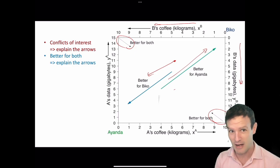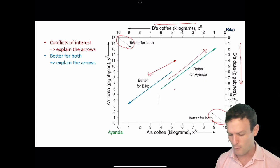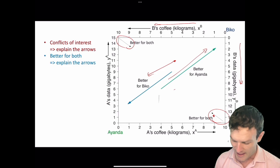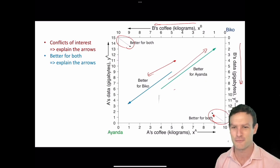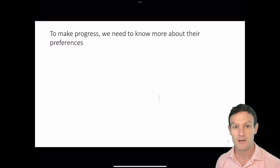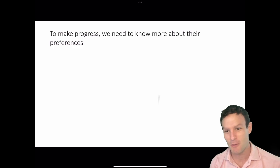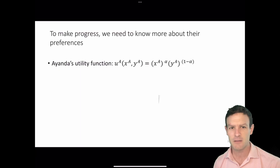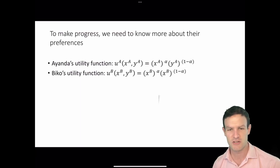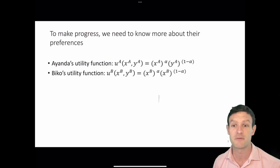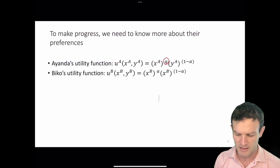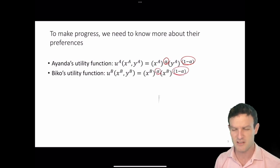If you're unsure about this, think about what would happen if we were at point z and Ayanda could get one more unit of y by giving up a unit of x — would she be willing to do that? To answer this, we need to think about their preferences. Each of their utility functions is a function of their own consumption of x and y. We're going to say they have Cobb-Douglas utility functions, raising x and y to powers alpha and one minus alpha.